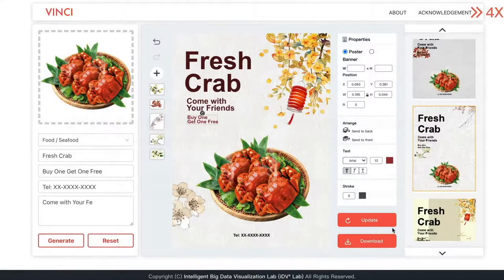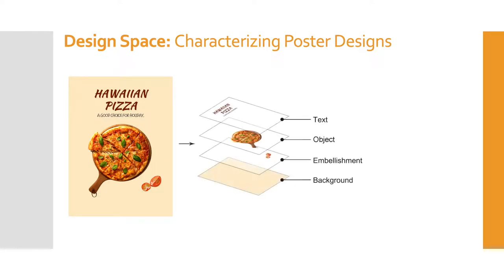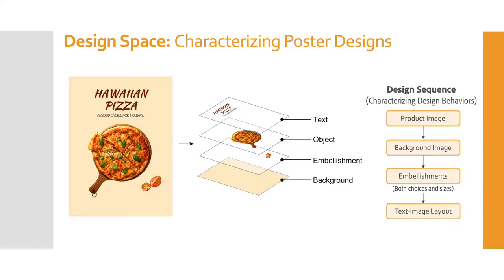Finally, the user can choose a satisfying poster and download it by clicking the download button. To train the generation model, our first step is to characterize the design of posters by constructing a four-dimensional design space that includes the key design elements.